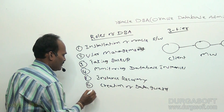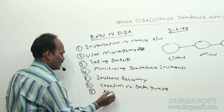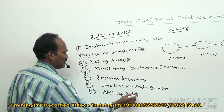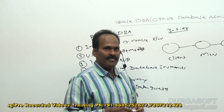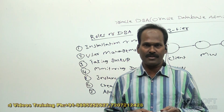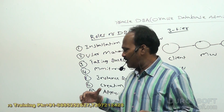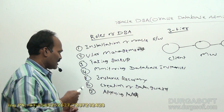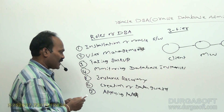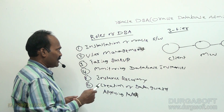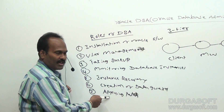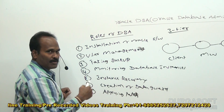The seventh responsibility is applying patches. Whenever some bugs occur at the database level, in order to rectify those bugs, the database administrator approaches Oracle support and takes support from Oracle Corporation. Once a quarter — meaning once every three months — they apply patches to fix the bugs. Whenever a bug occurs, the DBA approaches Oracle Corporation, which sends a relevant patch, and it is the DBA's responsibility to apply that patch to fix the bug.